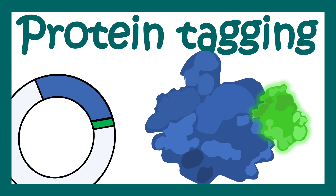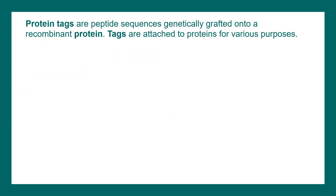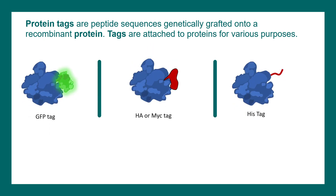In this video we'll talk about protein tagging. Protein tags are peptide sequences which are genetically grafted onto a recombinant protein. Tags are attached to the protein and they are useful for many purposes. There are many types of tags such as GFP tag, HA or MC tag, HIS tag, etc.